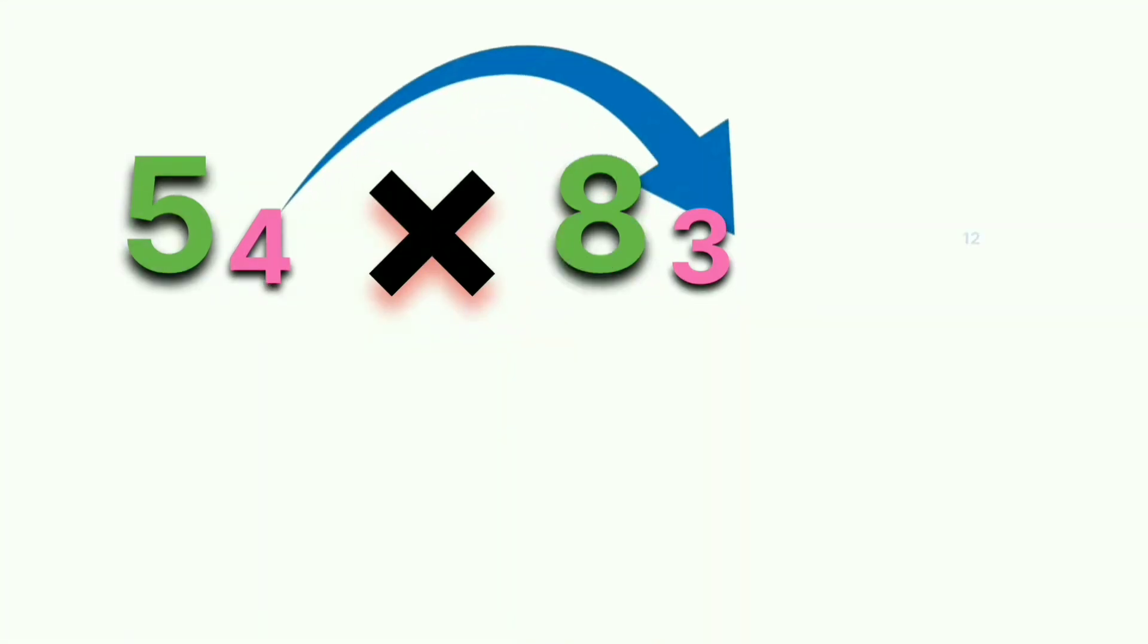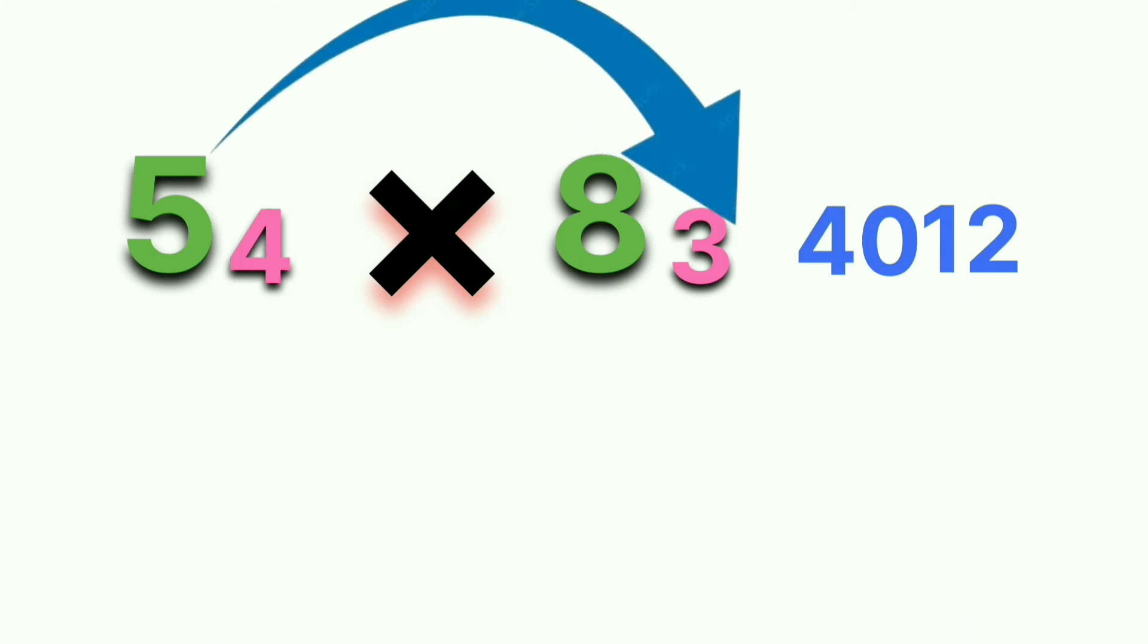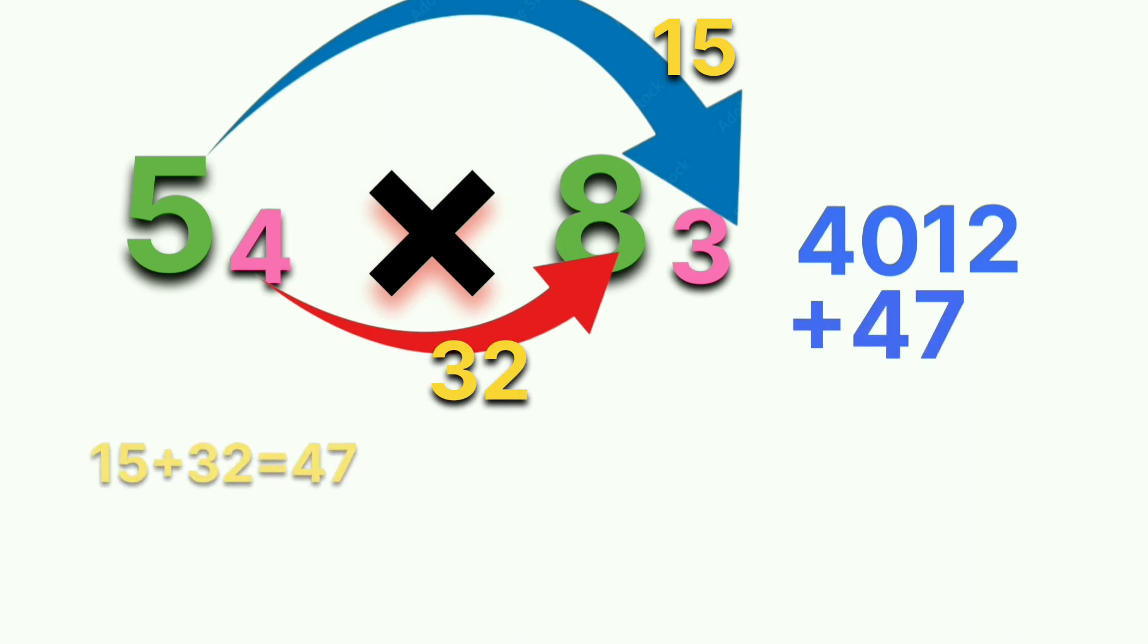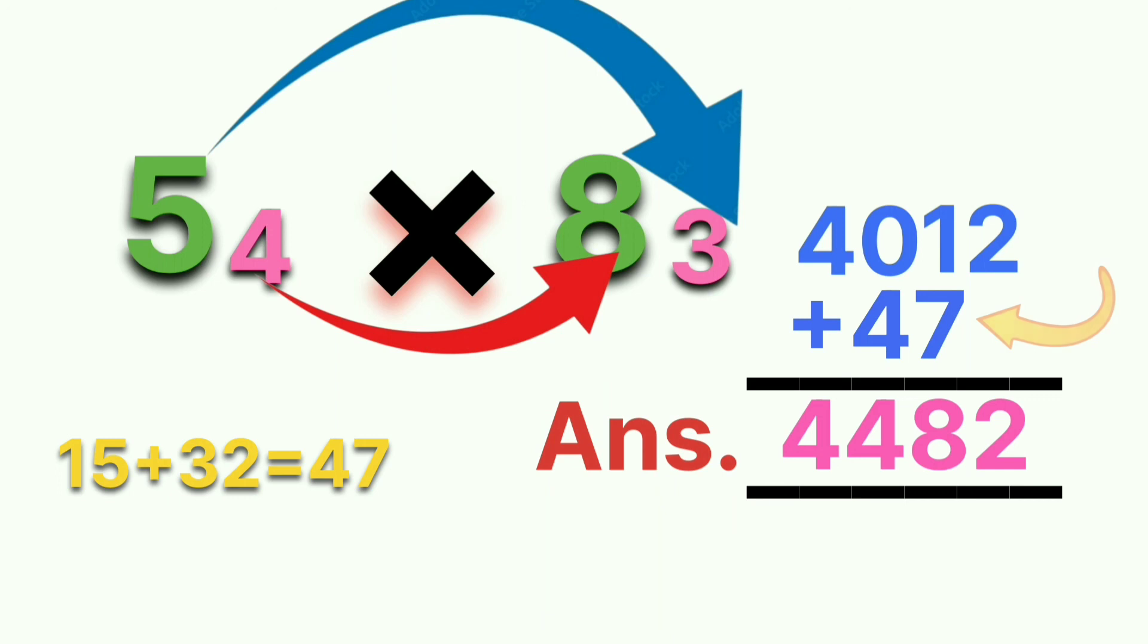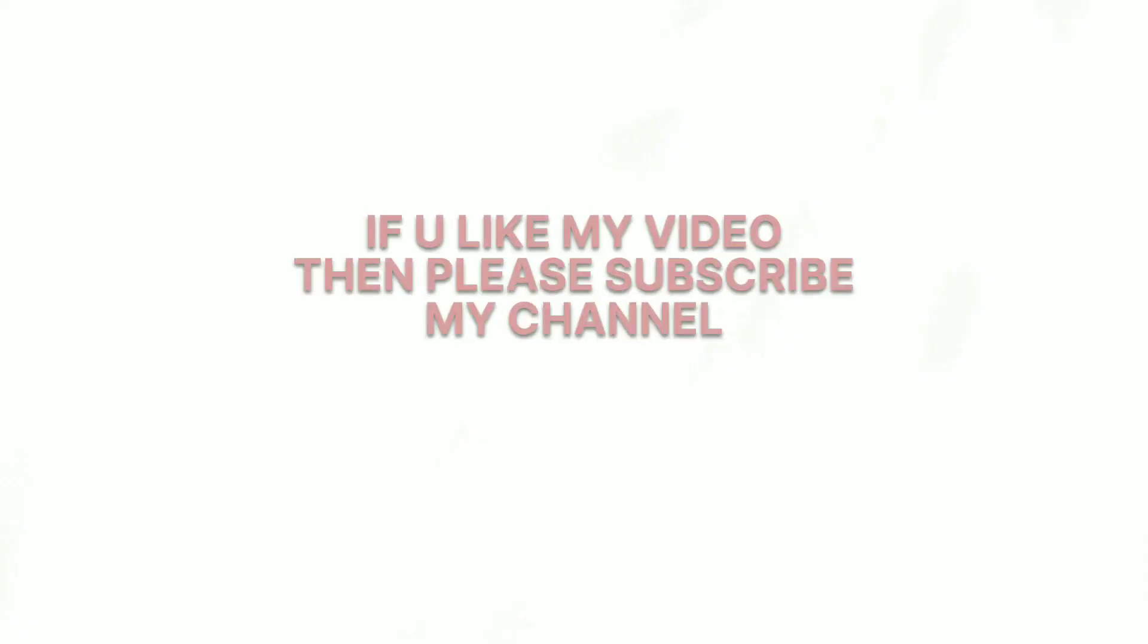The speaker repeats the entire multiplication method step by step: multiply 4×3=12, then 5×8=40, write 40 above 12. Cross multiply 5×3=15 and 4×8=32, add to get 47. Finally add 47 to 4012 to get the answer 4482.